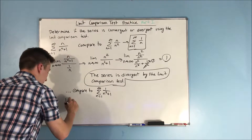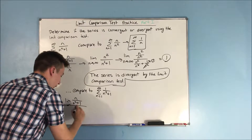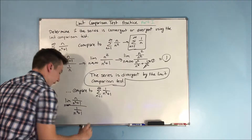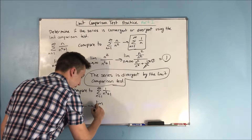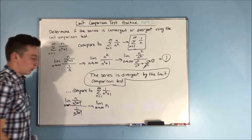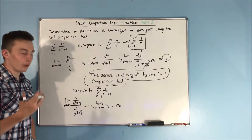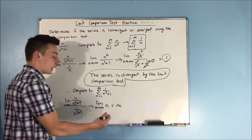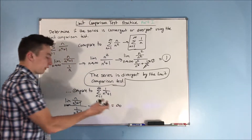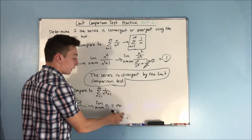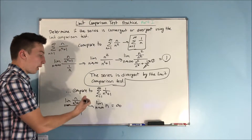When you put it in the limit — the limit as n approaches infinity of n over n squared plus one, over one over n squared plus one — those n squared plus ones are going to cancel out. You're left with the limit as n approaches infinity of n, which equals infinity. You're not going to be able to use the limit comparison test here because c has to be finite and greater than zero. Infinity is not. That's telling you that your comparison is not correct.